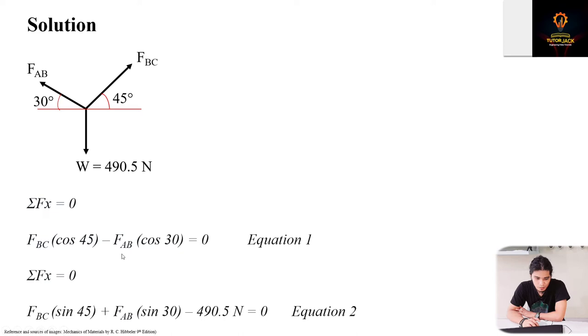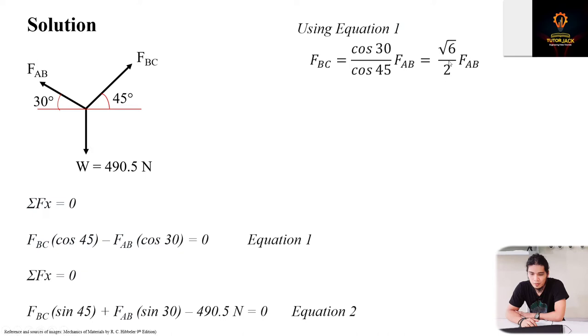We now have two equations with two unknowns, FBC and FAB, so we can solve them. Let's start with FAB. We express FBC in terms of FAB from Equation 1. We can get FBC as square root of 6 divided by 2 times FAB. This is the relationship value of FBC in terms of FAB. We just moved it here and divided by cosine 45. This value, FBC equals square root of 6 over 2 times FAB, we'll substitute into Equation 2.